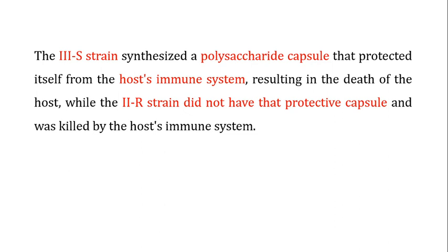The question is: why was the smooth strain virulent and the rough strain non-virulent? The smooth strain was synthesizing a polysaccharide capsule that was protecting it from the host immune system. So when you are infected with the smooth strain, it defeats your host immune system, resulting in the death of the host. The rough strain does not have the ability to produce this protective polysaccharide capsule, and the host immune system was easily killing the rough strain.